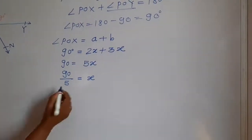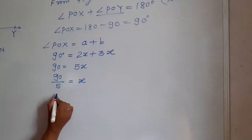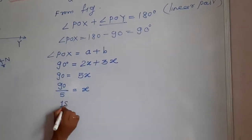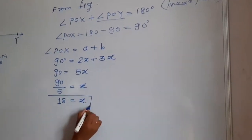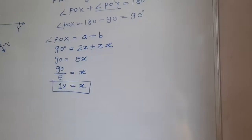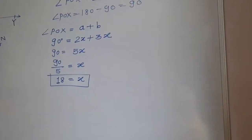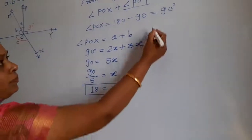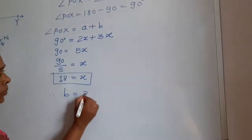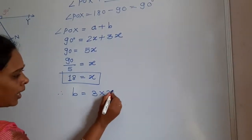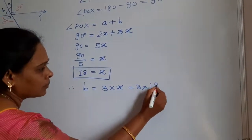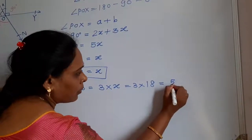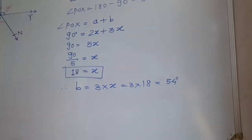Now dividing 90 by 5: the value of X is 18. You have to find out the value of B only, because B and C are again in a linear pair. Therefore B equals 3 multiplied by X, means 3 multiplied by 18, and that value is 54. So the value of B is 54 degrees.